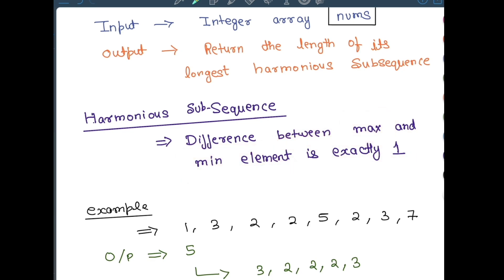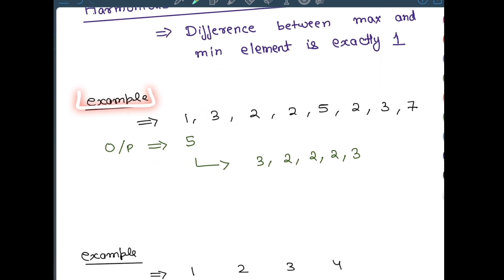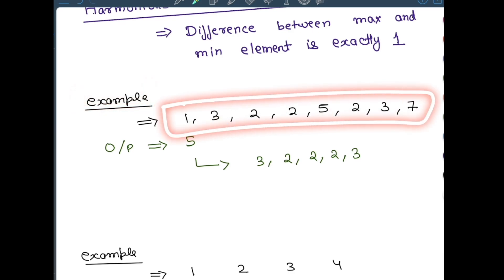Basically any array in which when you find the max element and the min element, their difference will be exactly one. In the example, the given array nums is [1, 3, 2, 2, 5, 2, 3, 7]. This is your given input array nums.